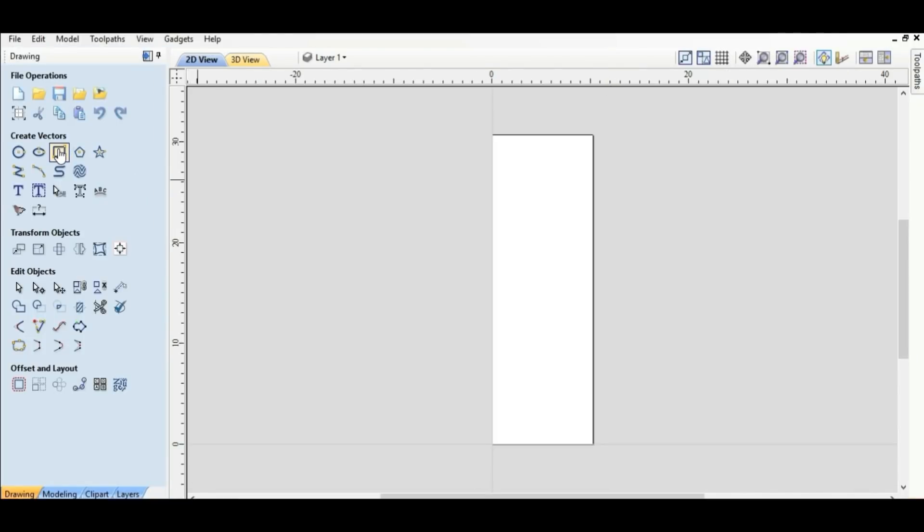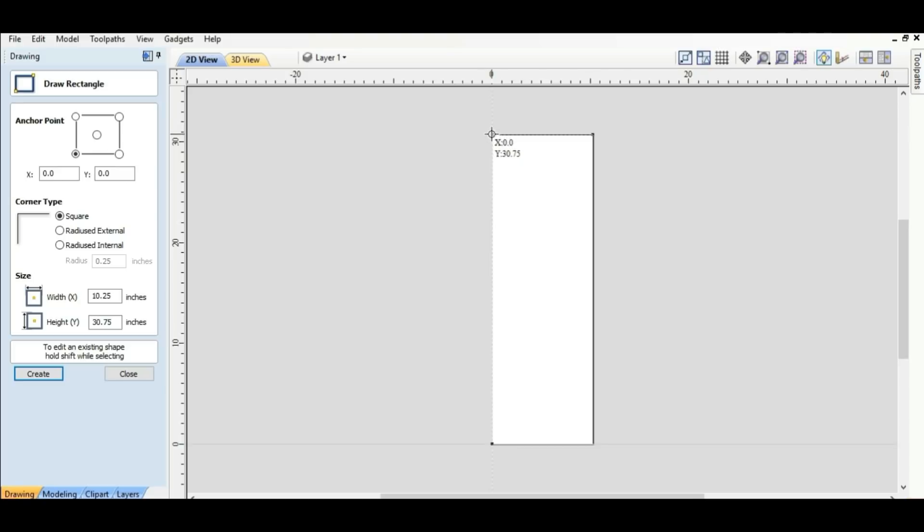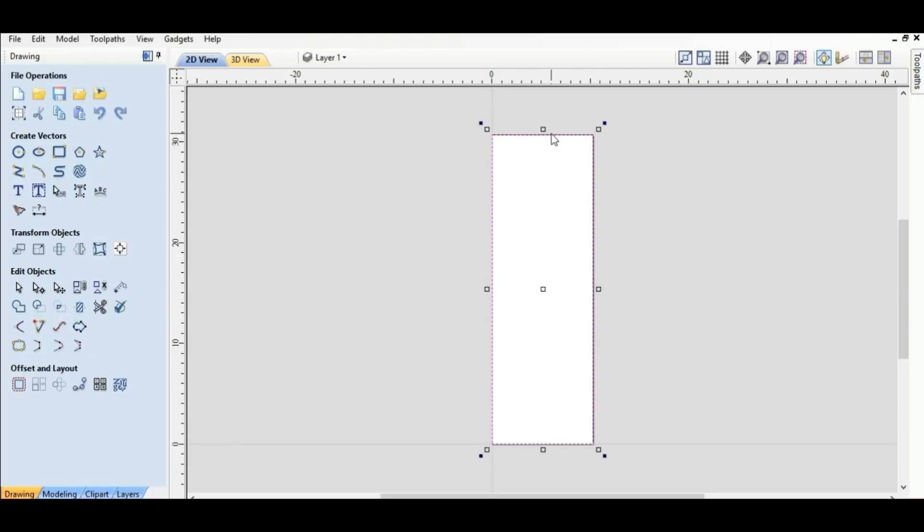All I'm going to do is come over here and grab this square tool and I'm going to make a rectangle the exact size of this. I'm going to close out of this, double click that, and then I'm just going to make it a little bit bigger. I'm going to hit shift and then make it just a little bit bigger and all I want to do is just make sure I get the corners milled too.